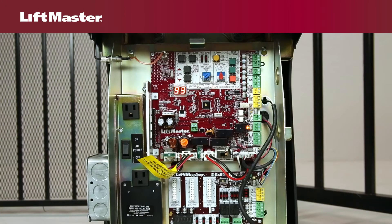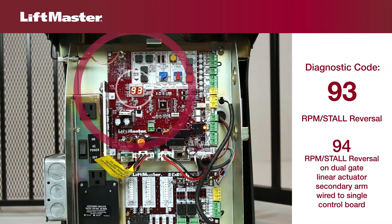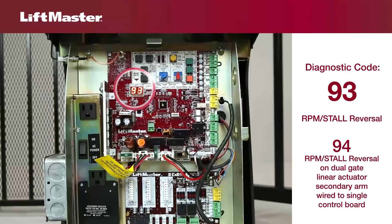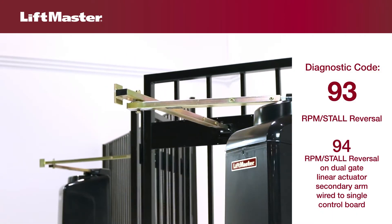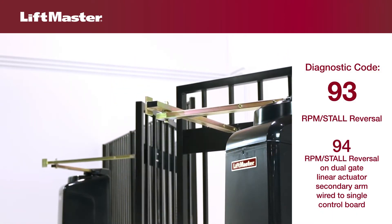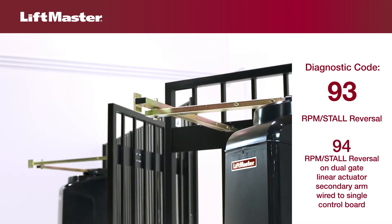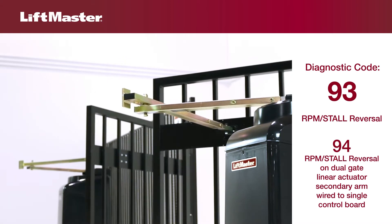Look at the diagnostic display while attempting to run the operator. Diagnostic code 93 indicates an RPM stall reversal. Code 94 indicates a force reversal on the secondary operator of a linear actuator system where both arms are connected to the same control board. An RPM stall reversal typically means the gate was prevented from moving either in the open or closed direction due to a physical obstacle or resistance.